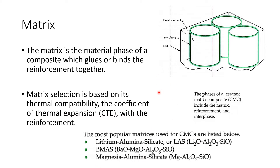Don't forget the two major energy types: kinetic energy — the moving ability — and potential energy — the ability to stay in place. The most popular matrices used for CMCs include lithium aluminum silicate (LAS), magnesium aluminum silicate (MAS), and others. The abbreviations like LAS or MAS are used in the industrial world; don't confuse them with their full chemical formulas.